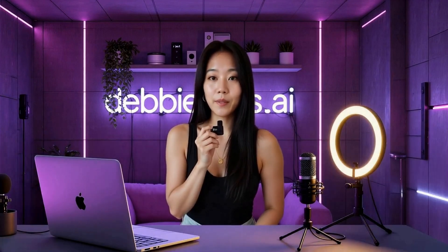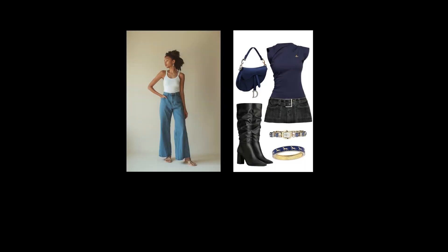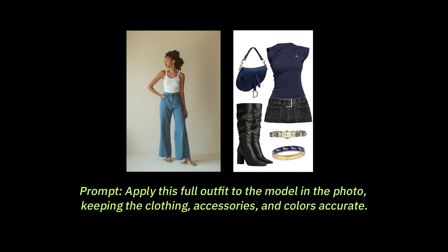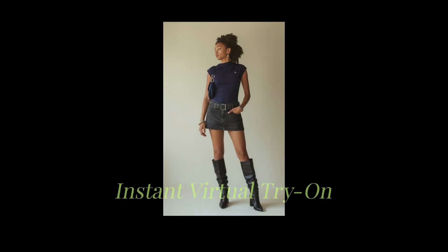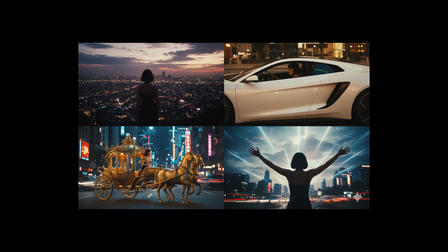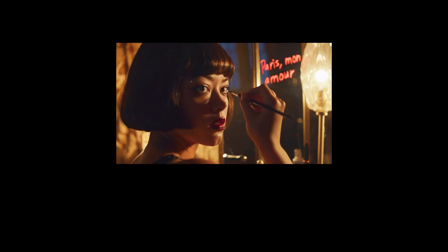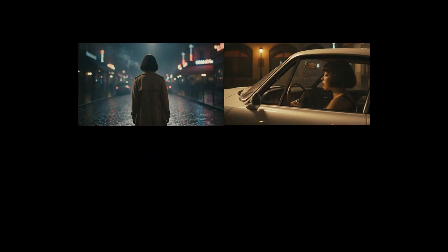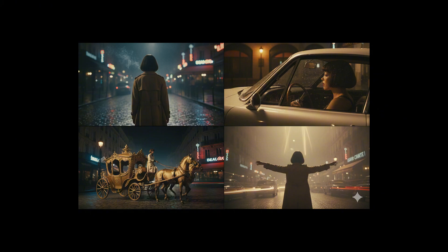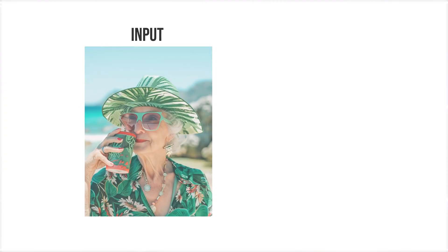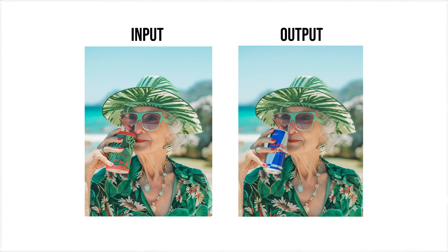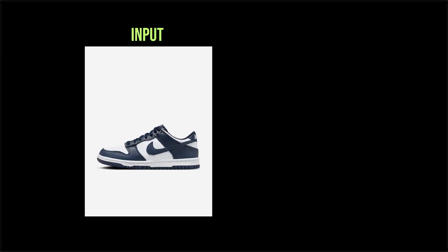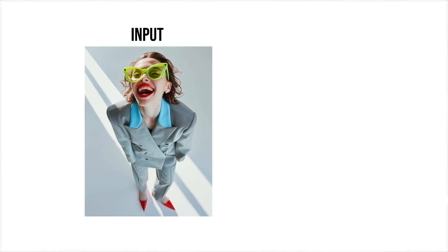Let's push it. Upload a model and apply a full outfit. Prompt: 'Apply this full outfit to the model in the photo, keeping the clothing, accessories, and colors accurate.' Boom — instant virtual try-on. Or ask for a cinematic montage. Prompt: 'Create four portrait shots of this woman in a cinematic sequence.' NanoBanana builds a perfect four-panel story in seconds. NanoBanana can turn one product photo into a full campaign — from polished product shots to lifestyle ads and even wild experiments — all in minutes.